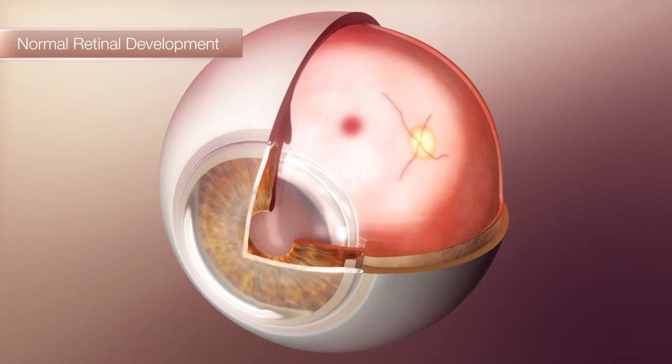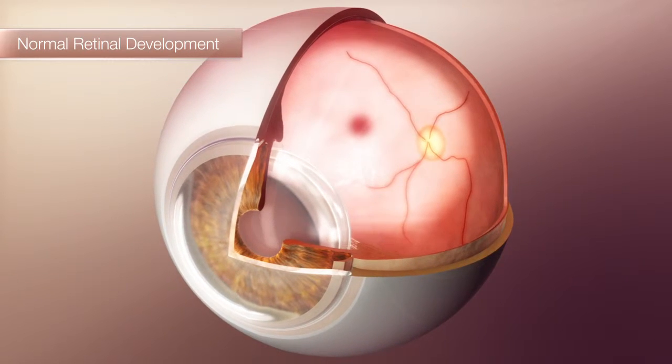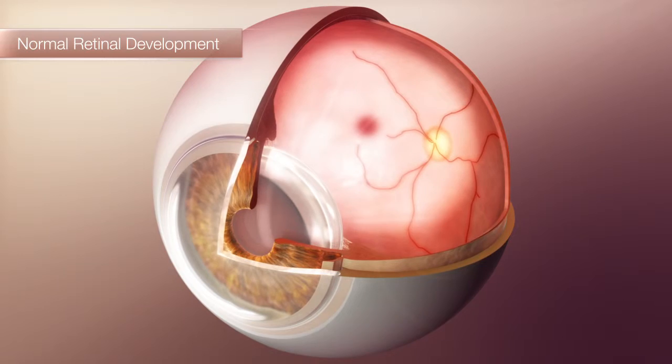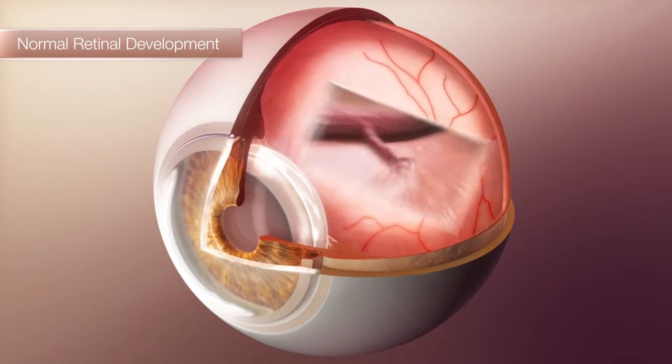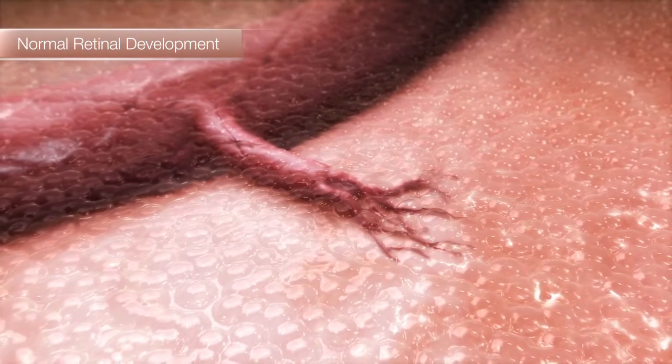First, we see the development of the vascular structure. Then the retinal vasculature is laid down, starting at the optic nerve and radiating outward as new vessels bud from existing ones.